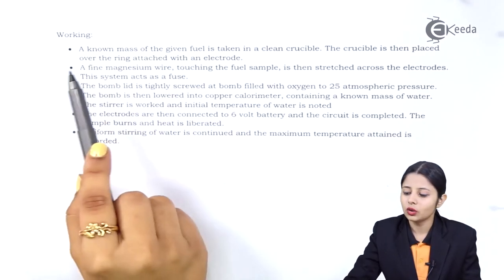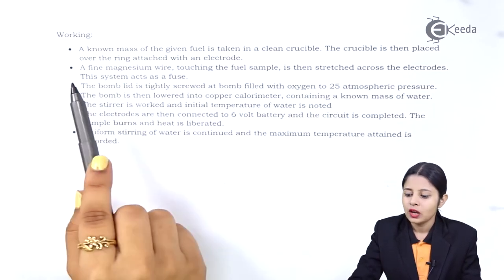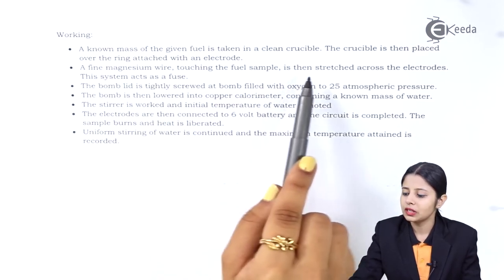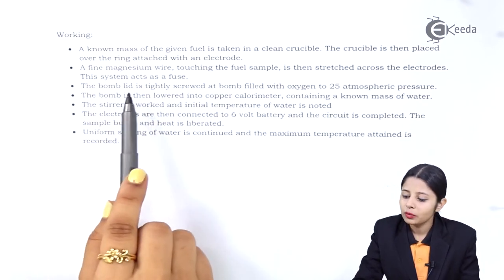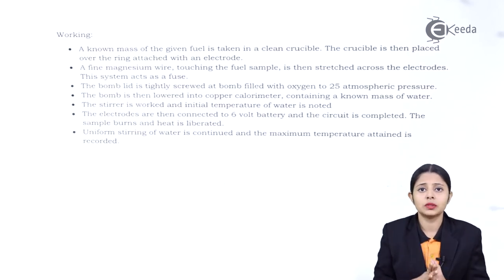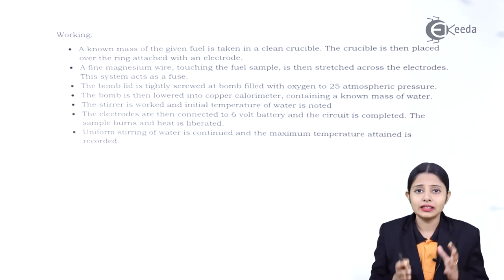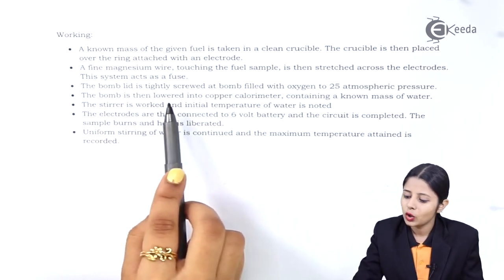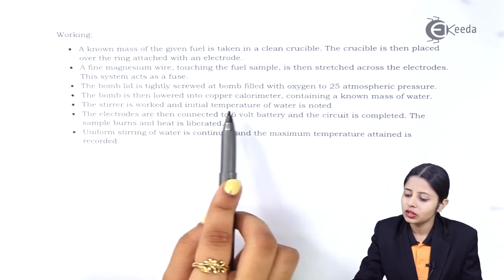Now let us see the working. A known mass of the given fuel is taken in a clean crucible. The crucible is then placed over the ring attached to the electrode. A fine magnesium wire touching the fuel sample is then stretched across the electrodes — this system acts as a fuse. The bomb lid is tightly screwed up and the bomb is filled with oxygen to 25 atmospheric pressure. The bomb is then lowered into the copper calorimeter containing a known mass of water. The stirrer is operated and the initial temperature of the water is noted.